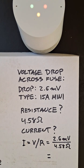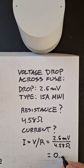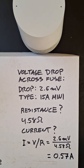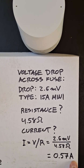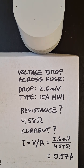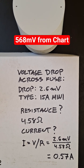2.6 divided by 4.58 is approximately 0.57. So we just calculated the amps — 0.57 amps, which is 570 milliamps. That's pretty much the same number we got using the fuse chart, so this is a quick way to estimate current.